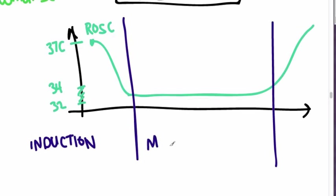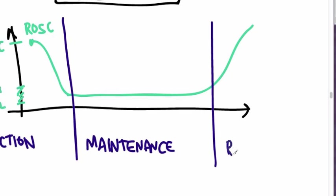And then slowly bring them back up. And so this whole process is broken down into three phases. The first is called induction, then maintenance, and this last part is called rewarming.